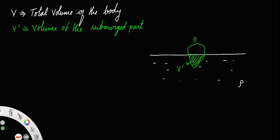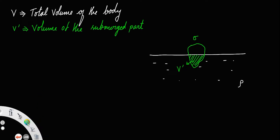Let sigma be the density of the body. Since only this part is submerged, the submerged volume displaces an equal volume of liquid. Let this displaced volume be V dash. Whatever part of the body is submerged inside the liquid, that equal amount of volume will be displaced by the body.